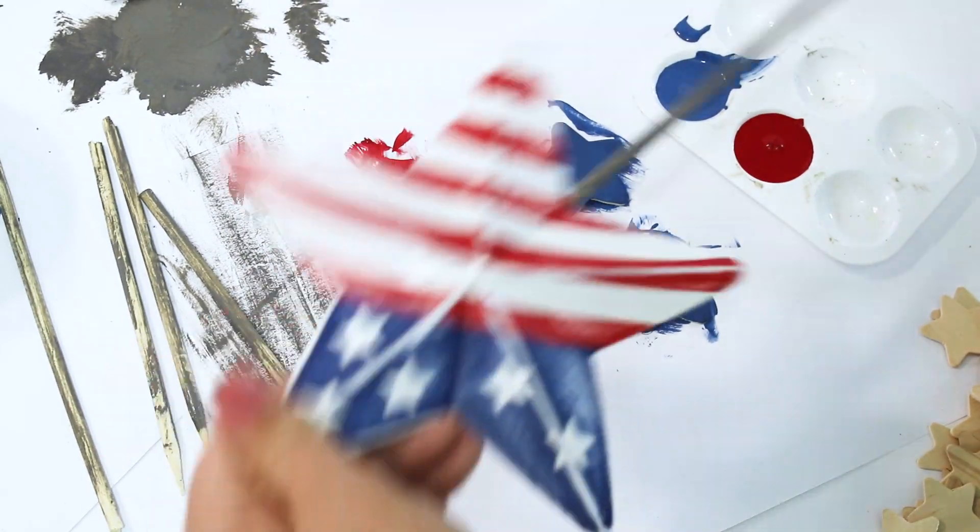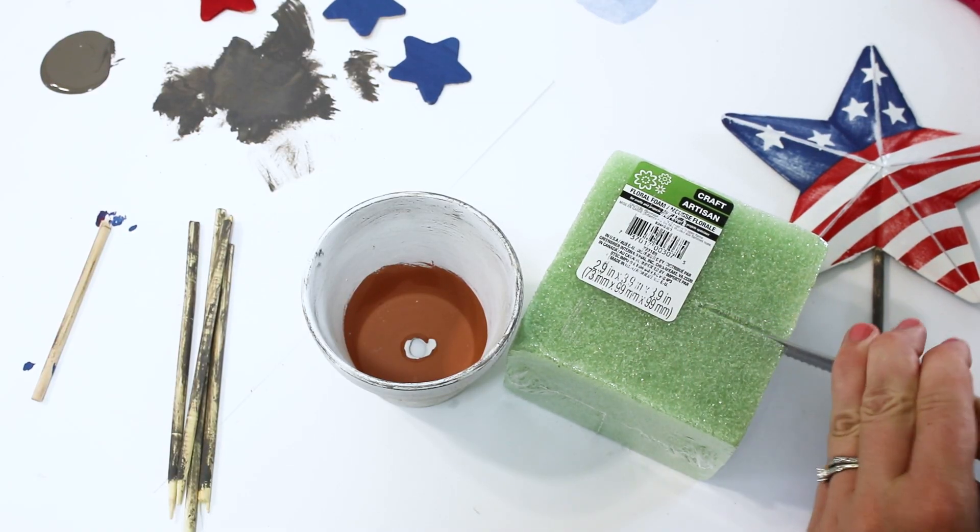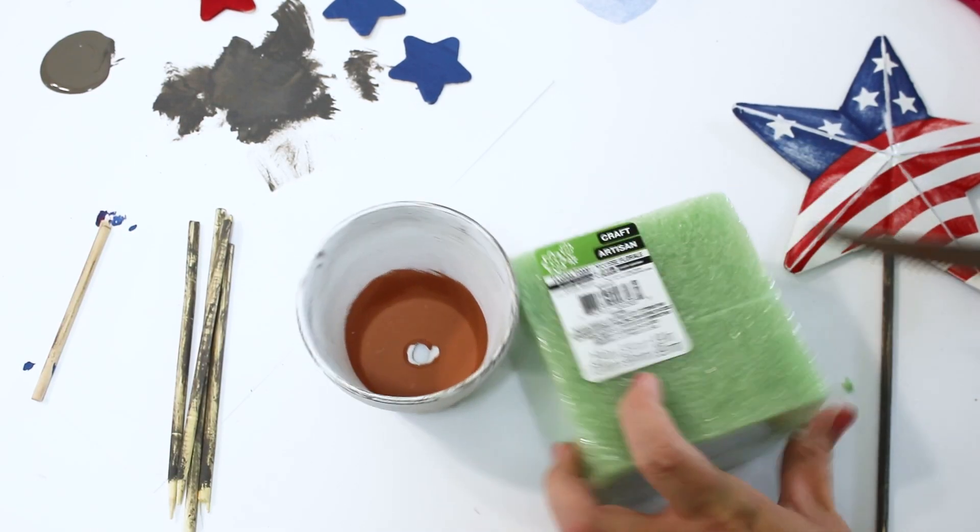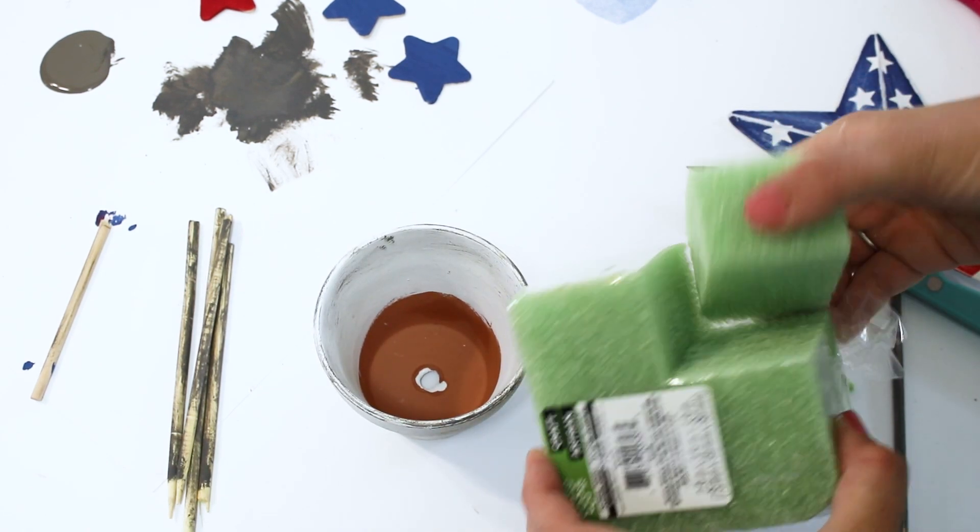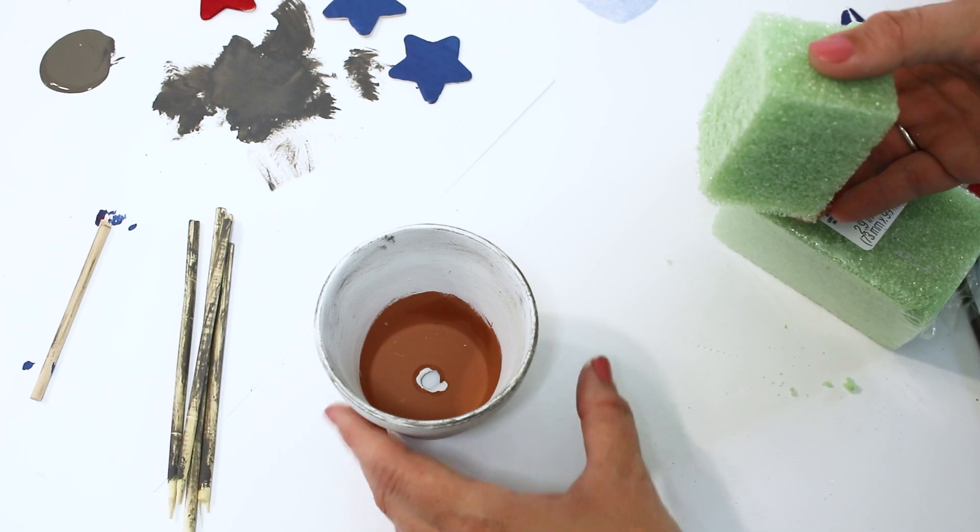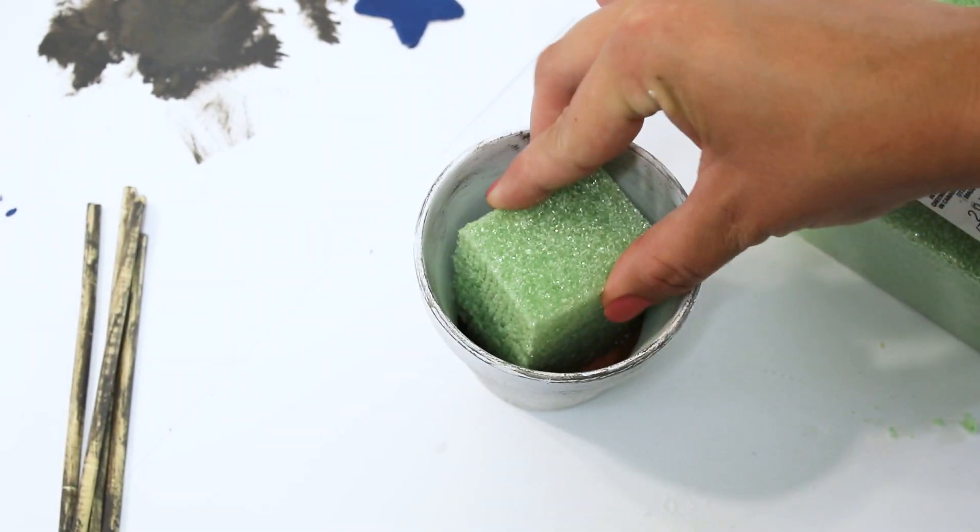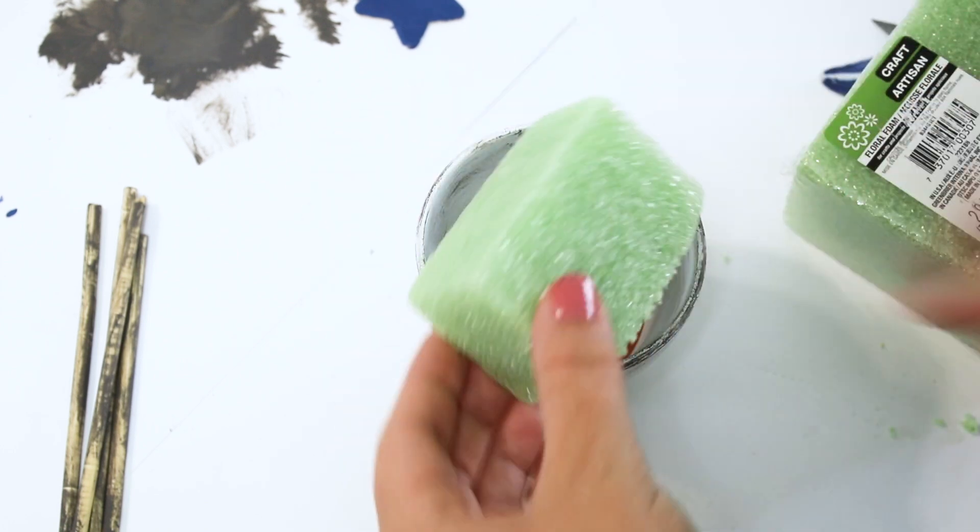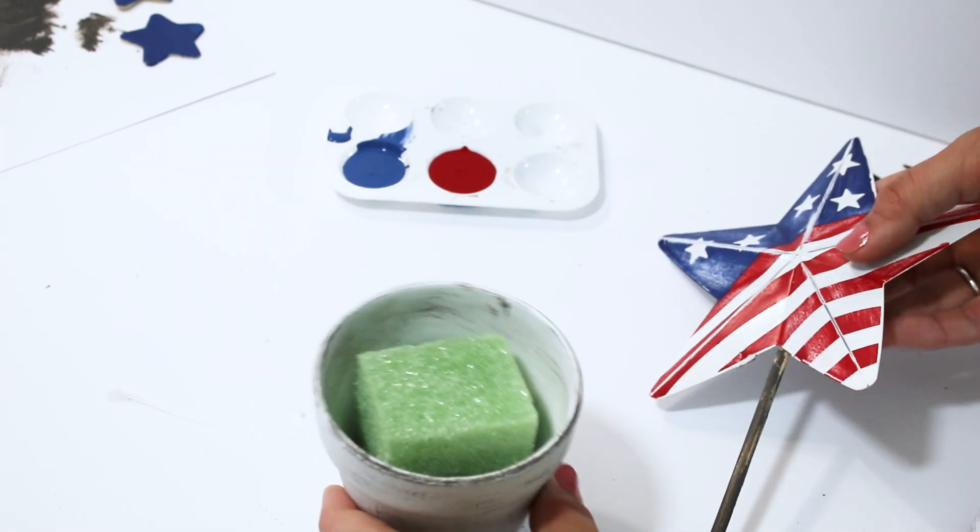To have something to push all of these dowel rods down into, I needed a piece of styrofoam. I love these little blocks. They are so convenient from the Dollar Tree. And if you just use a serrated knife, you're able to cut the exact shape and size that you will need. I did tack this down with a little bit of hot glue so it would be a little bit more stable. And then I just arranged and pressed down all of my dowel rods into the styrofoam.